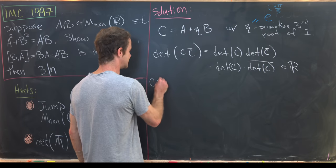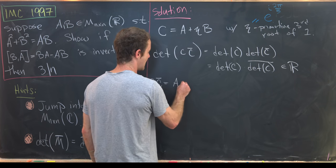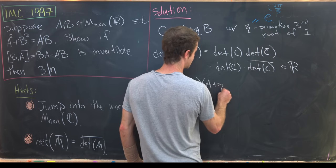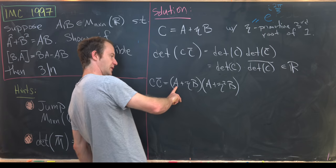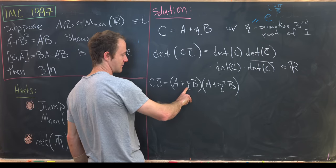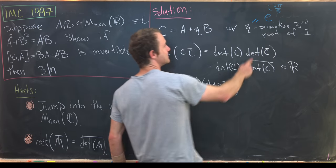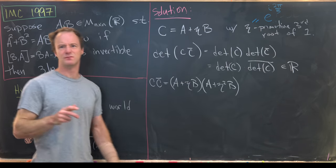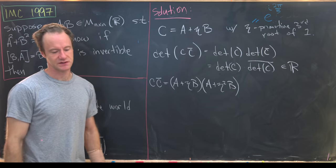Now, let's calculate C times C conjugate and see what it looks like. So that's going to be A plus eta times B times A plus eta squared times B. And why is that? Well, it's because A and B have real entries and the complex conjugate of eta is eta squared.